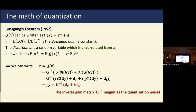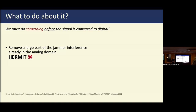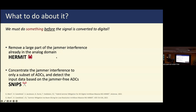There is only one way to deal with this: we have to do something before we convert the signal to the digital domain. We must get rid of the jammer before quantization. We'll talk about two methods for this. One is called HERMIT — the idea is to get rid of a large part of the jammer already in the analog domain before the ADCs. The second approach is SNPS — the idea is to ensure that not all of the jammer's energy falls on all ADCs, but only on a subset of the ADCs.